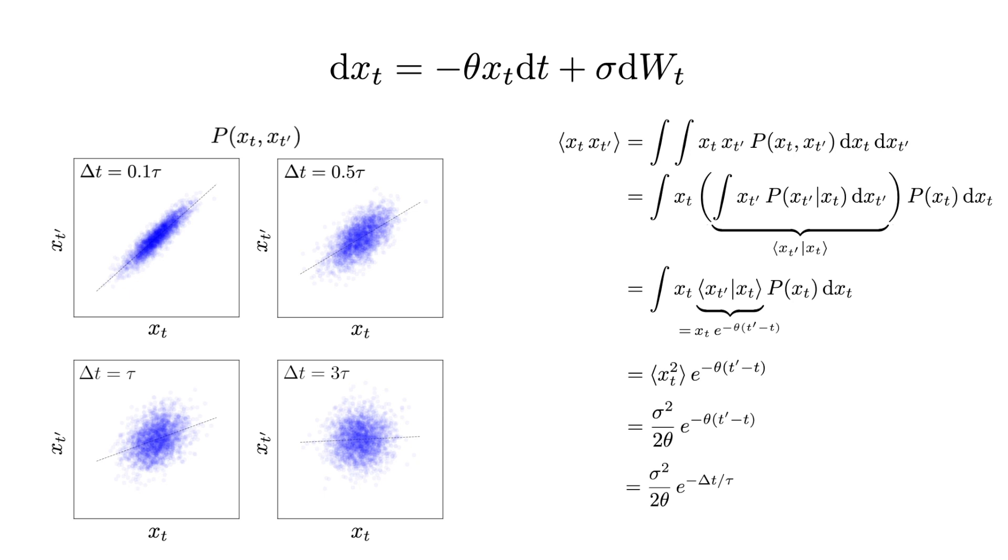This shows that the autocorrelation function decreases exponentially with the delay time, which explains why two x values lose their correlation when the delay time becomes comparable to the timescale tau.